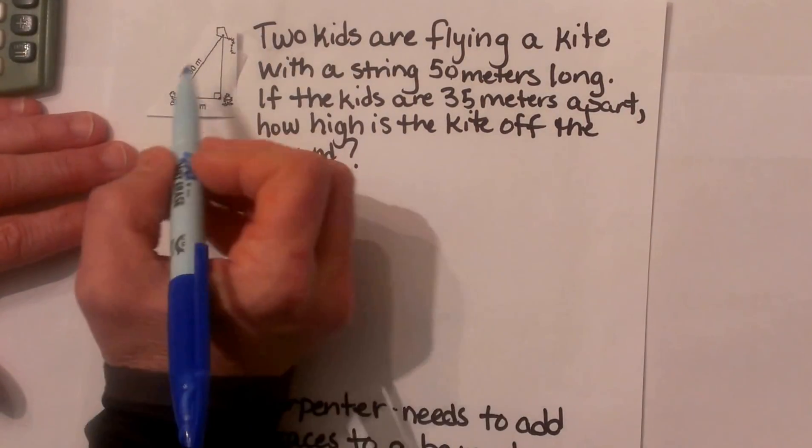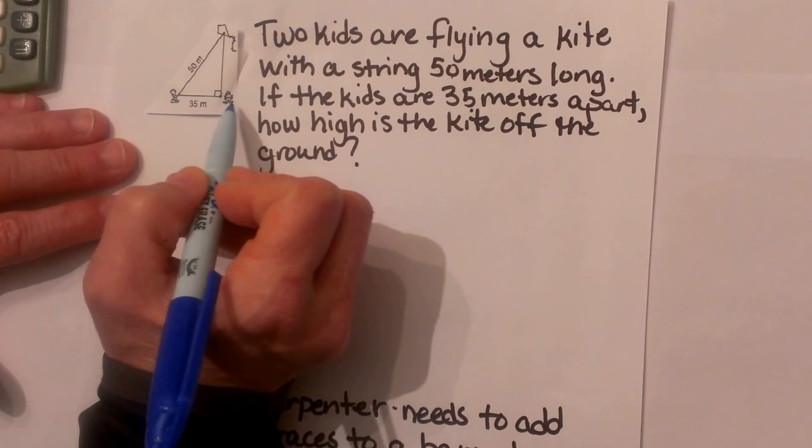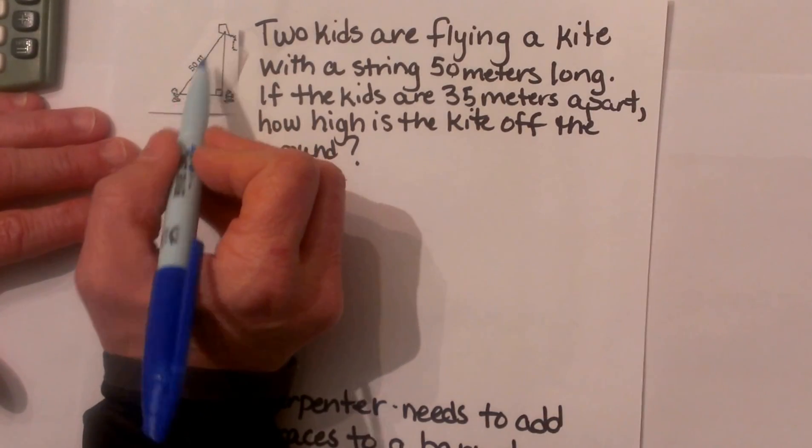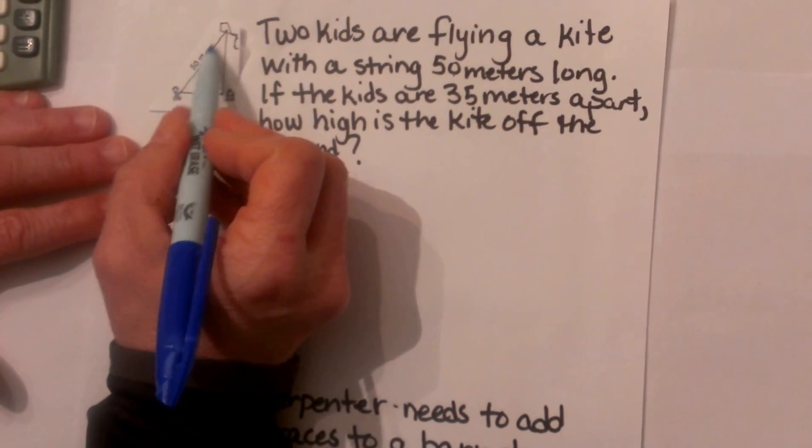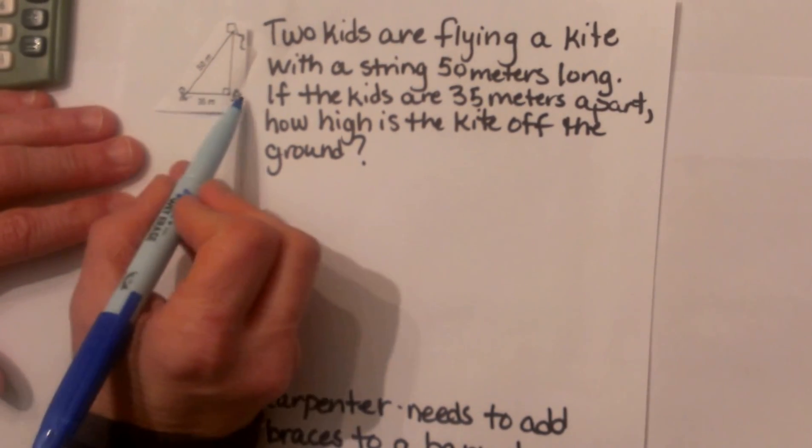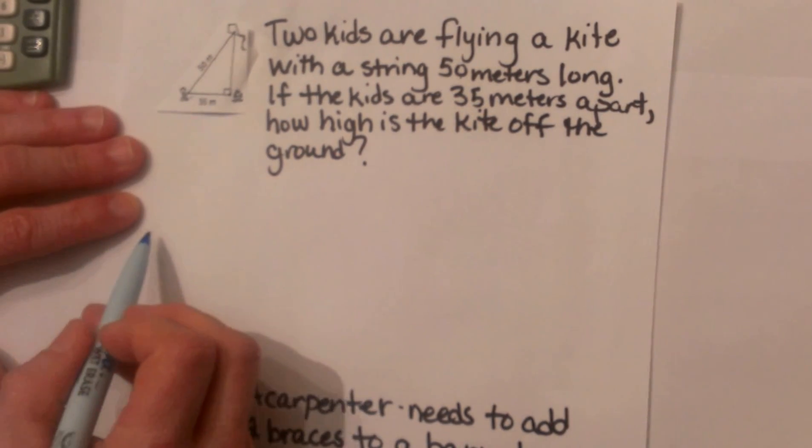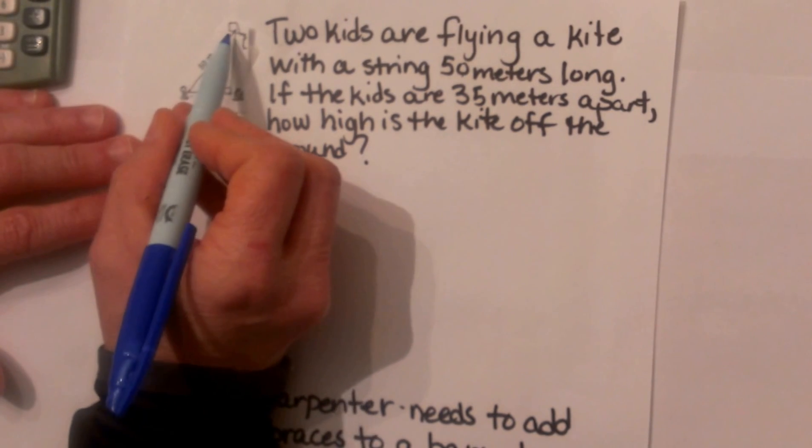So we have been given a diagram where here are the two children on the ground. Here is our kite and our string is marked at 50 meters. The children are also marked at 35 meters apart. So we already can see our right triangle.